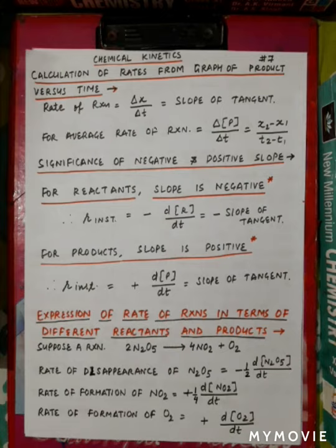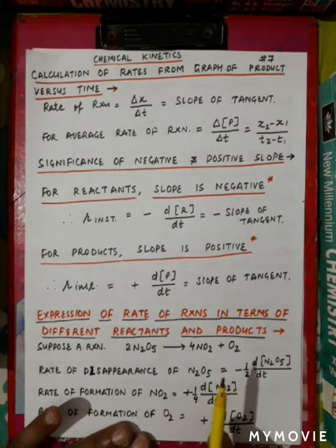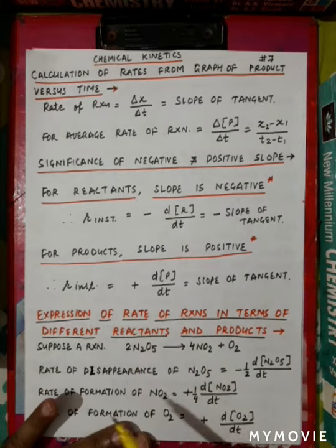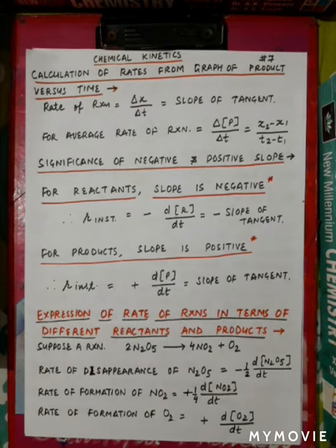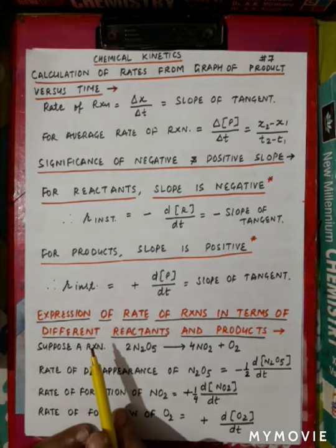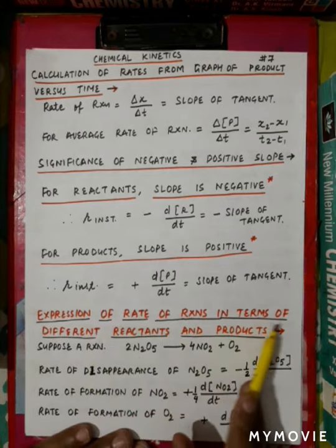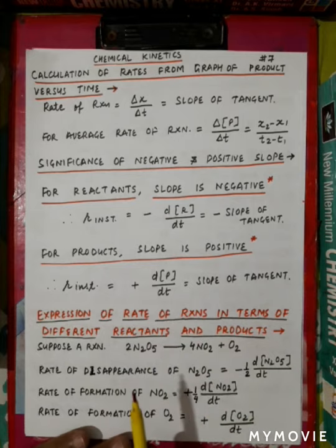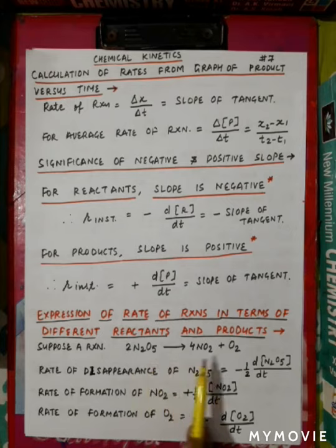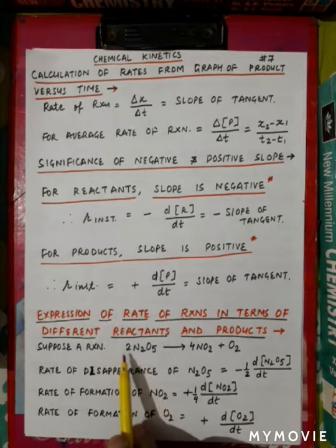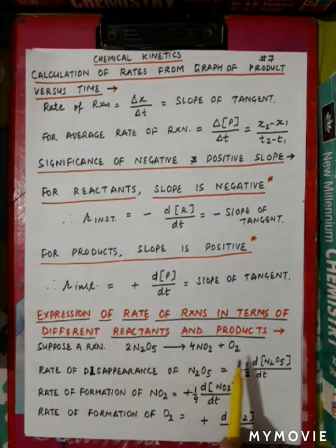We learned about reactant and product - the molar concentration of reactant decreases and the product increases. That was a one-minute recap of the last video. Today we are in the second lecture, and we have learned about the expression of rate of reaction in terms of reactant and products - specifically the rate of disappearance of reactant and rate of appearance of product.